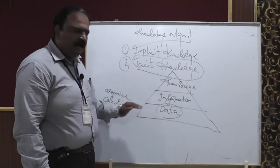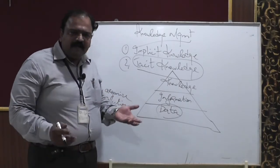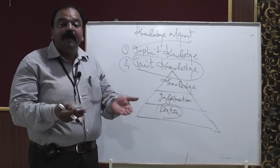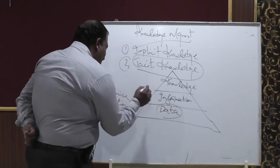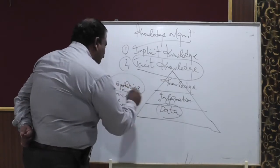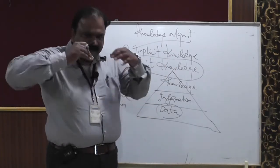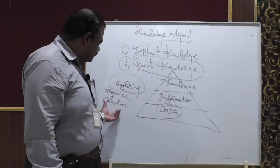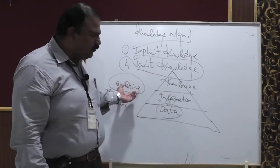After collection and organizing of data, we move on with the second important part, which is information. What do we call information? The raw materials collected by the data team are going to be converted into meaningful information. The step we follow in the information stage is synthesizing — the collected data is converted into meaningful information.